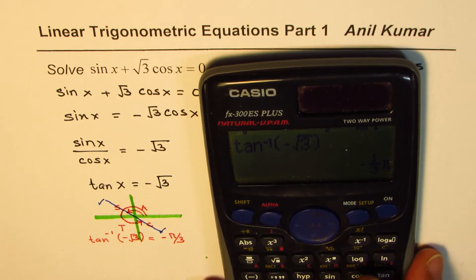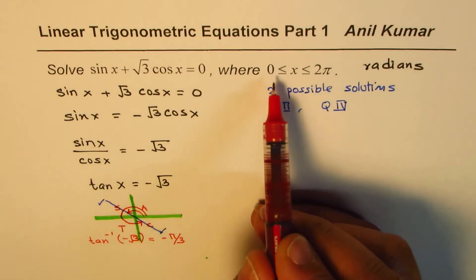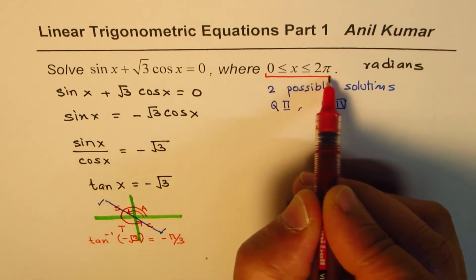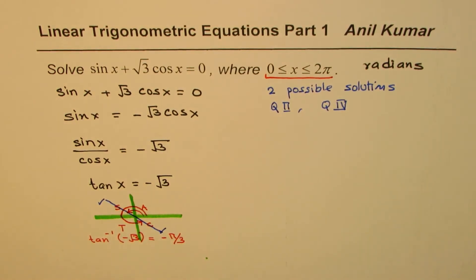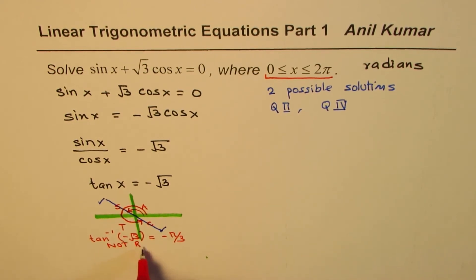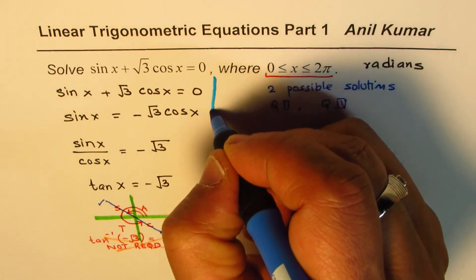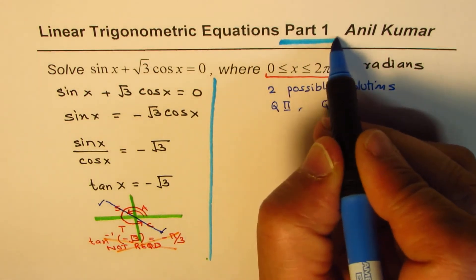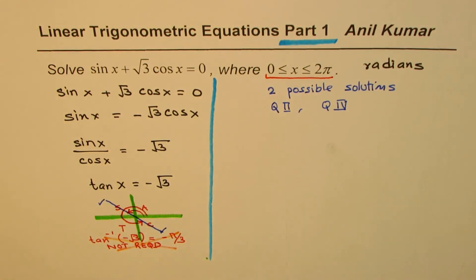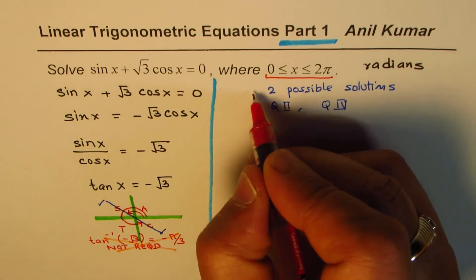And we got one solution, which is minus π by 3. But unfortunately, this is not within our domain 0 to 2π. So we are looking for a positive value between 0 to 2π. This is not required. This is wrong. So this is not required. So how do we find the solution? That is the major question. So we are trying to understand those steps. What we found here is that this thing really doesn't work for us.